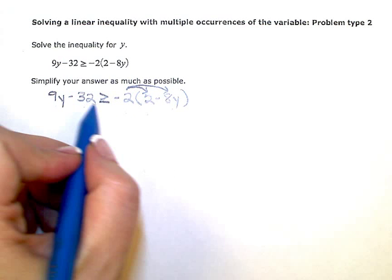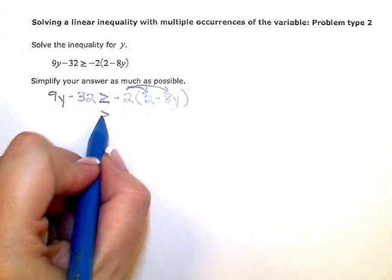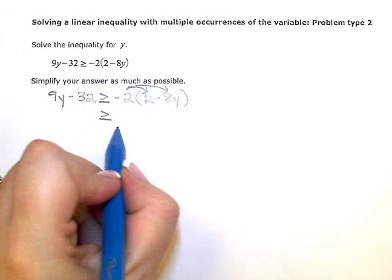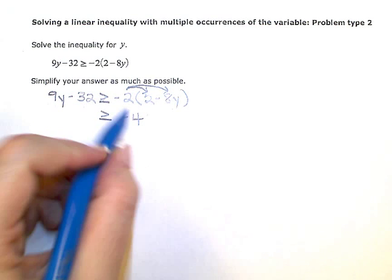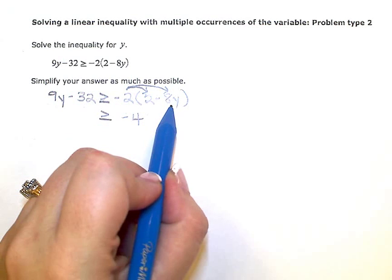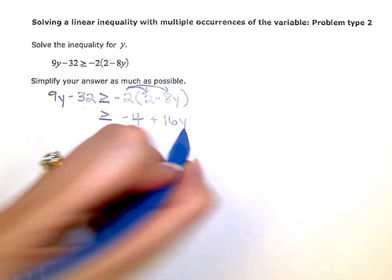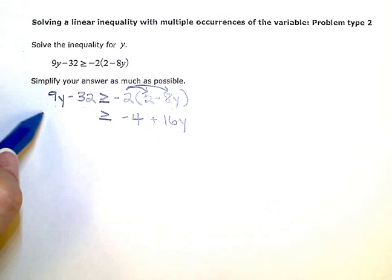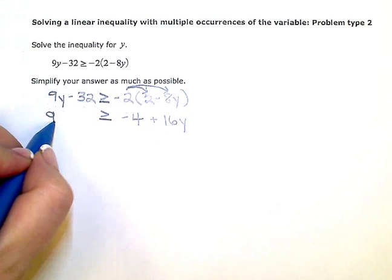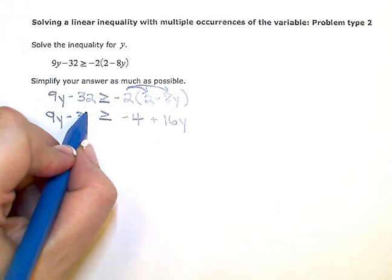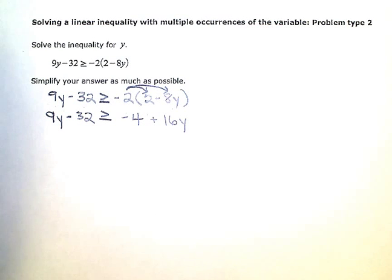On this side of my inequality, I'm going to have negative 2 times positive 2 is negative 4, and negative 2 times negative 8y is going to be a positive 16y. Since there was no simplifying on the left, I'm just going to bring down the 9y minus 32 on that side.